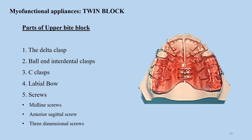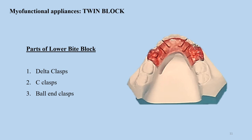The upper and lower bite blocks have different components. The upper bite block has a delta clasp, ball and interdental clasps, a C-clasp, a labial bow, a midline screw, and can also have an anterior sagittal screw or a three-dimensional screw. The image shown is a conventional twin block designed by Clark, where you can see one or more of these components.